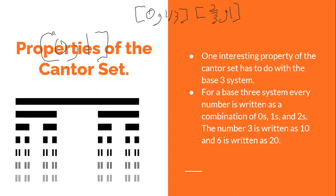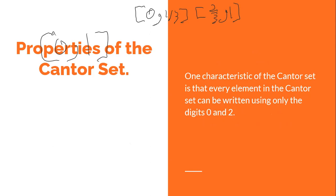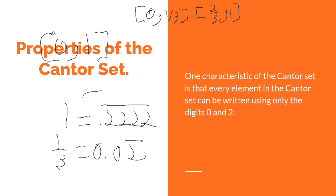There are a lot of interesting properties. One has to do with the base-three number system. We all use base 10 — zero through nine — and we know binary uses zeros and ones. A base-three system uses zeros, ones, and twos. One interesting property of the Cantor set with the middle thirds removed is that every number in it can be written using only the digits zero and two in base three. For example, one equals 0.2222 repeating, and one-third equals 0.02 repeating.